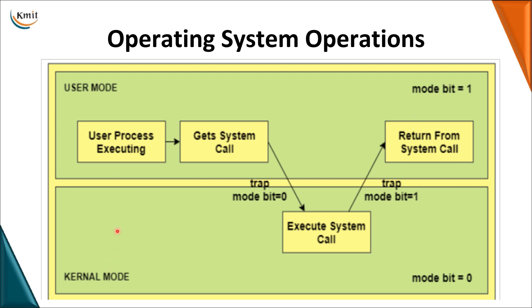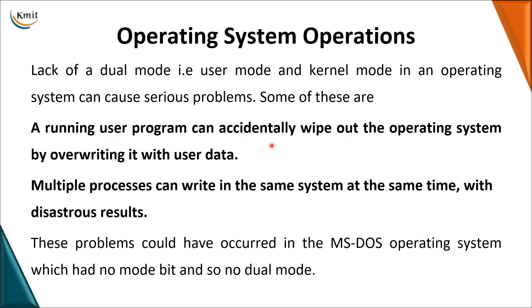This is called the dual mode of an operating system, where the operating system performs in user mode and kernel mode operations in kernel mode. Now assume there is no dual mode for your operating system — in that case, the user is given access to operate the kernel. The user could change any part of the operating system and operations would not execute correctly. Multiple processes could even execute or modify the code of another process's data. These problems were encountered in the MS-DOS operating system, which was only a single-mode operating system.